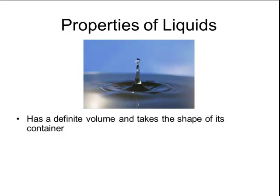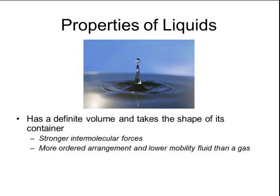A liquid differs from a gas because a liquid has a definite volume and takes the shape of its container. This is explained due to the stronger intermolecular forces between the particles. In a gas, the intermolecular forces were negligible because of the large distance between the particles. But in a liquid, the particles are much closer together, and the arrangement is more ordered, so liquids are considered a lower mobility fluid than a gas.